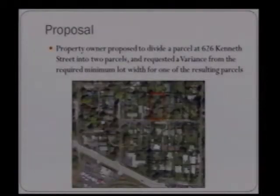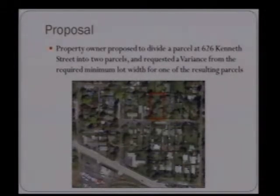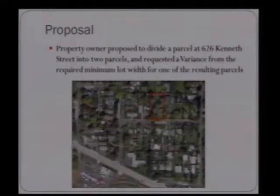The property owner proposed to divide a parcel at 626 Kenneth Street into two parcels and requested a variance from the required minimum lot width for one of the resulting parcels. The subject property is located here, outlined in red. It's on the north side of Kenneth Street between South Logan and Lynn Avenue. Here's just a closer look at the subject property.